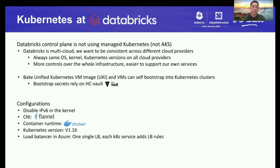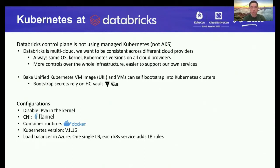We make our own virtual machine images and ensure these VMs can bootstrap into Kubernetes clusters, giving us more control. We can ensure consistent kernel OS version and Kubernetes version and it's easier to support our own services. In terms of configuration, we totally disabled IPv6 at the kernel level because we didn't need it before supporting PrivateLink. The CNI plugin we're using is Flannel, the container runtime is Docker, and we're running Kubernetes version 1.16.